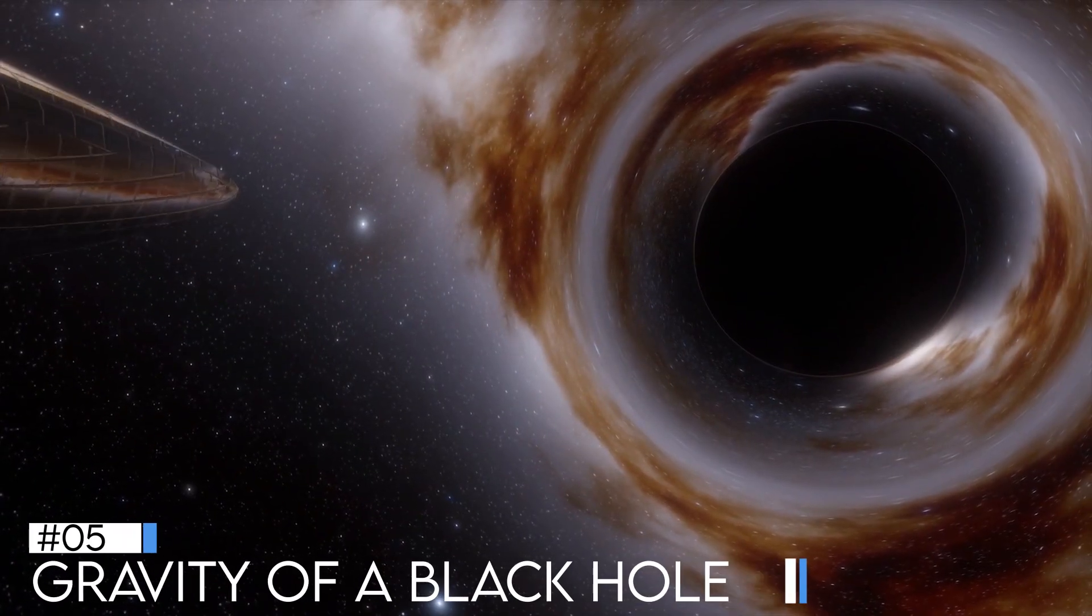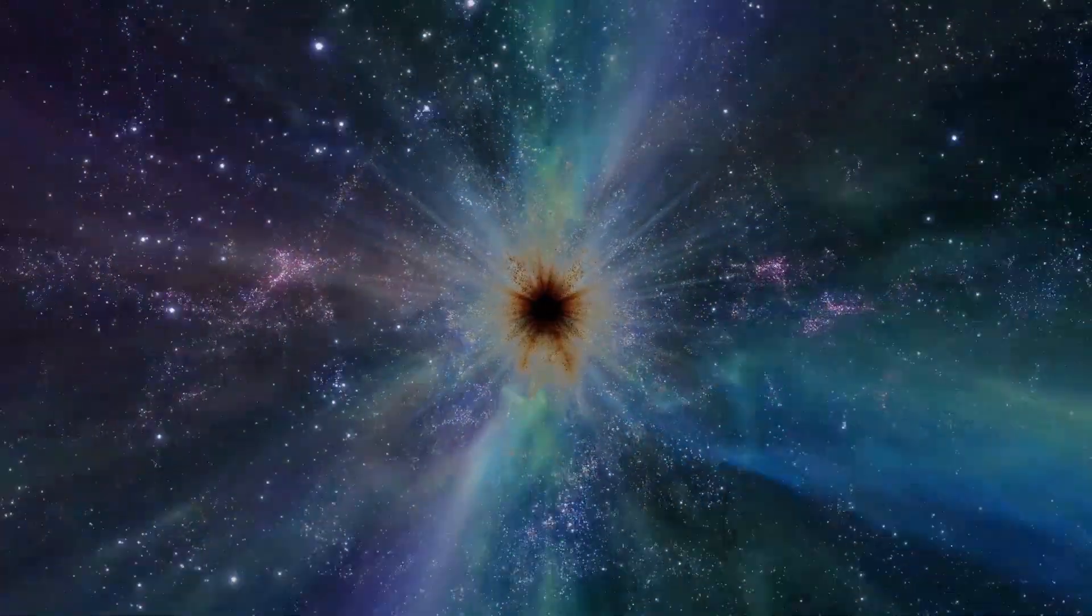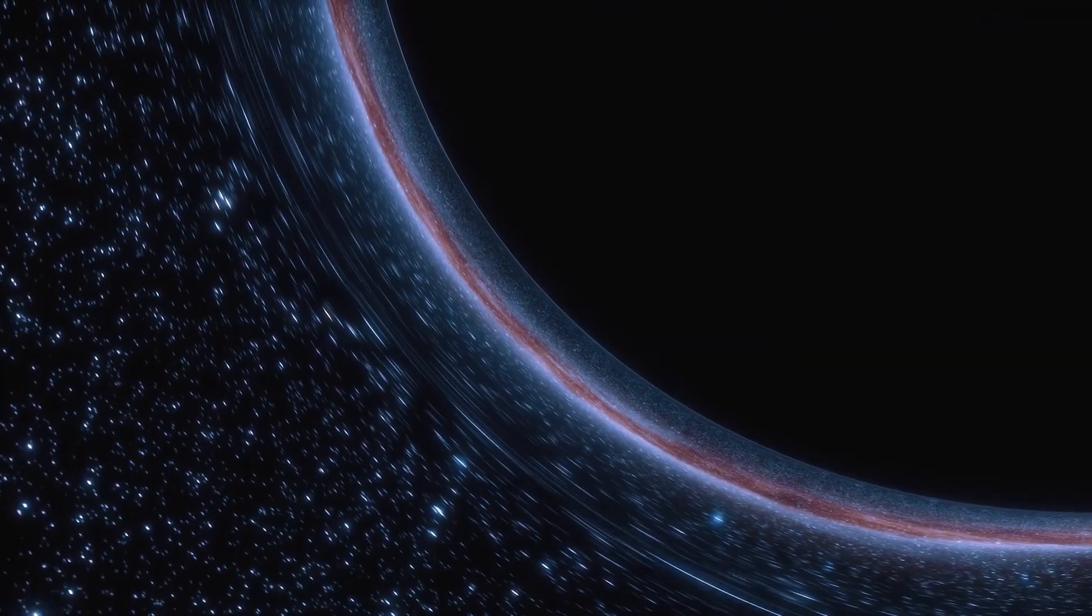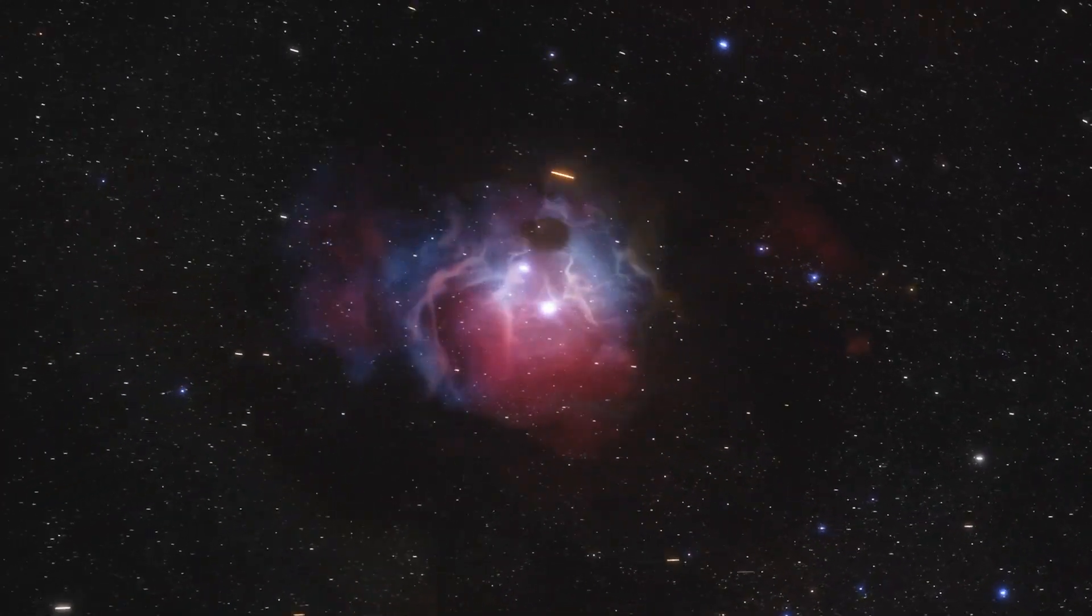Number 5. Gravity of a black hole. The massive gravitational influence of a black hole distorts space and time in the near neighborhood. The closer you get to a black hole, the slower time runs.